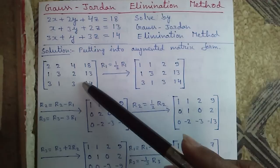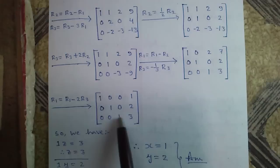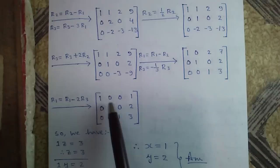Now Gauss-Jordan elimination method. Again, three equations are put into an augmented matrix. The objective of Gauss-Jordan elimination is to convert the coefficient matrix into an identity matrix. An identity matrix means all diagonal elements are 1 and all other elements are 0.